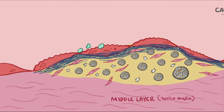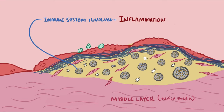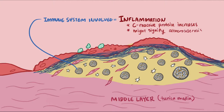The word that describes the immune system getting involved with something is called inflammation, so atherosclerosis is an inflammatory disease. The protein called C-reactive protein increases in the blood during an infection or when inflammation is occurring. While an elevated C-reactive protein isn't specific enough to diagnose atherosclerosis, it can act as a red flag that atherosclerosis might be occurring, especially if someone has symptoms or other risk factors.